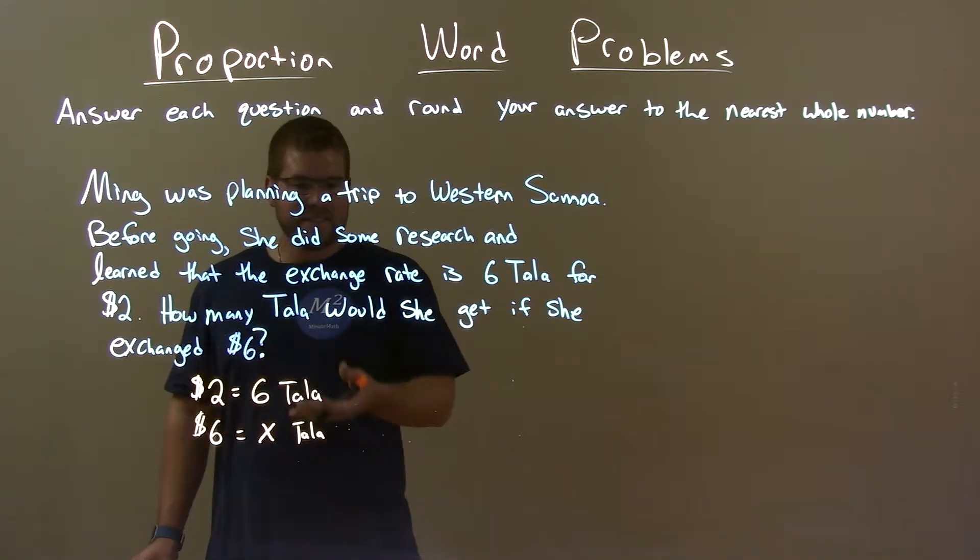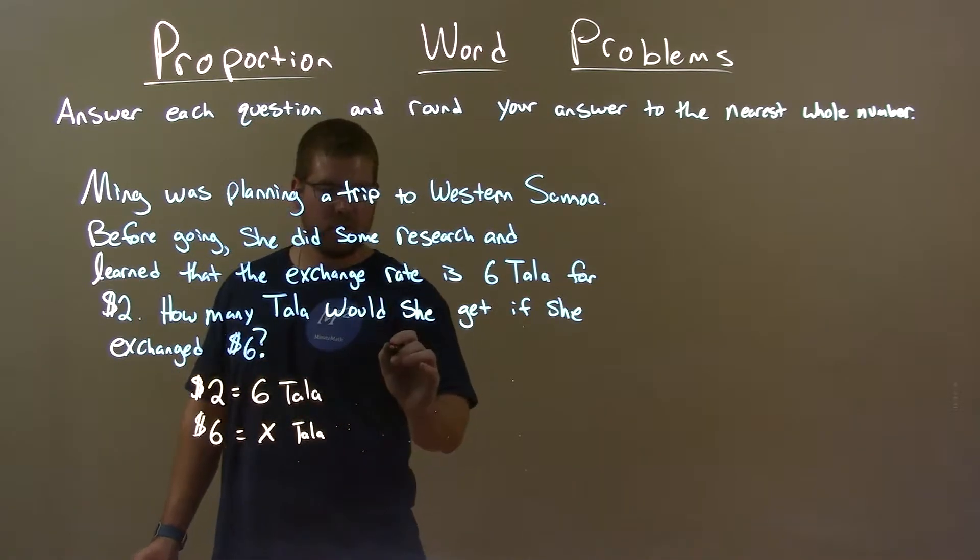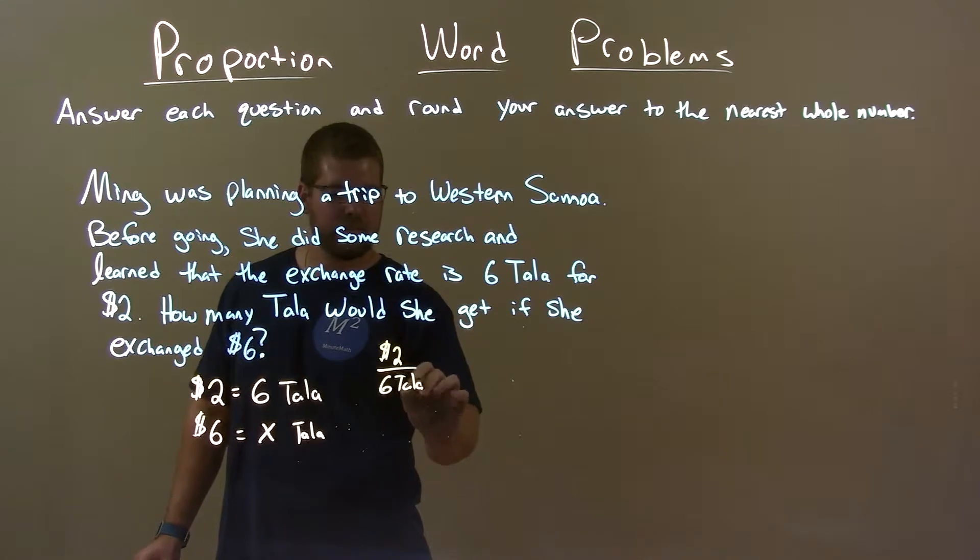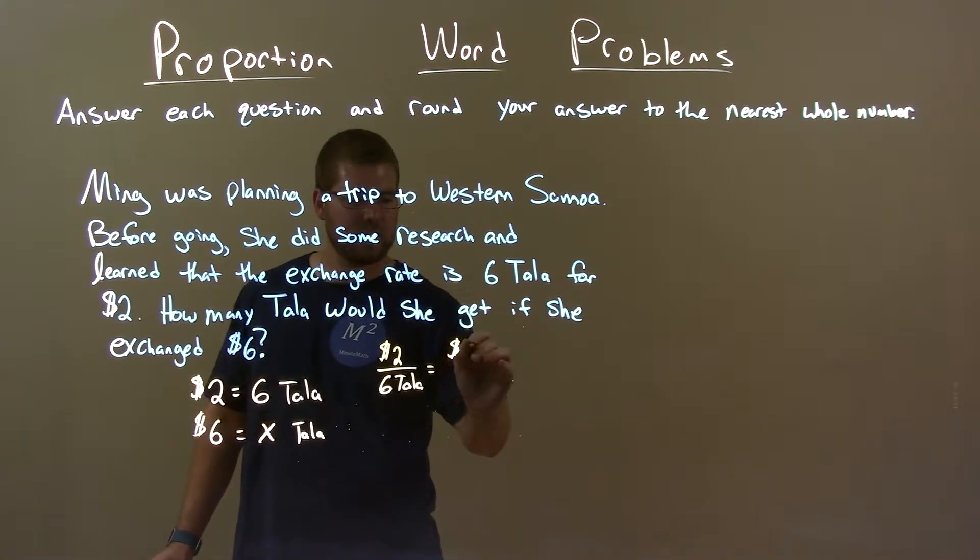Okay, so what I want to do is set up a proportion here. We know two dollars over six tala is equal to six dollars over our x tala.